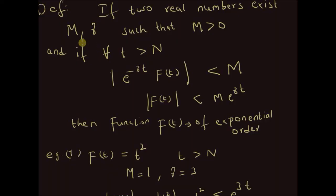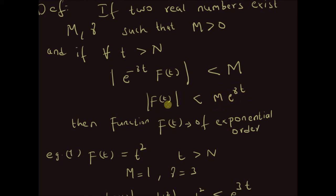To summarize: if there exist two real values m, gamma such that for positive m and for time t greater than a certain value n, the absolute value of f of t is less than m times e to the power gamma t, then f of t can be defined as a function of exponential order. Thanks for watching.